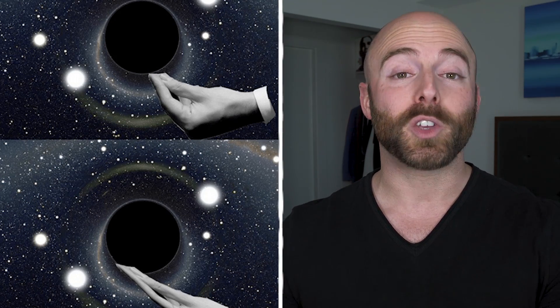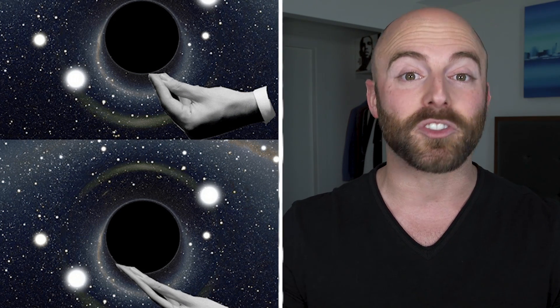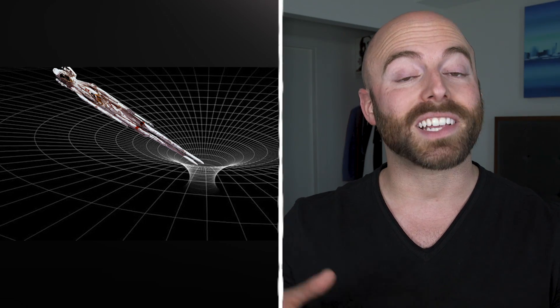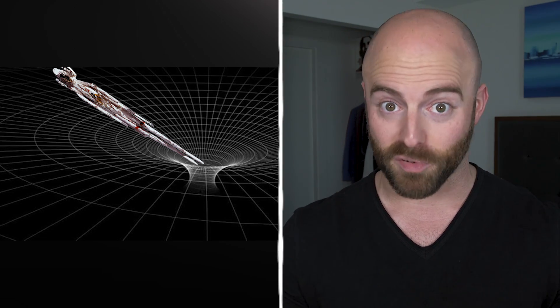Spaghettification is the weird term used by physicists to explain what happens to an object once it enters a black hole. If you passed across the event horizon of one of these black holes, you would go through something called the spaghettification process.